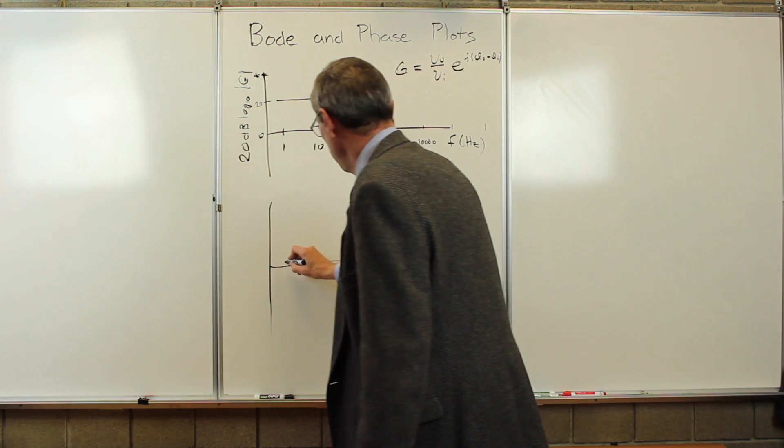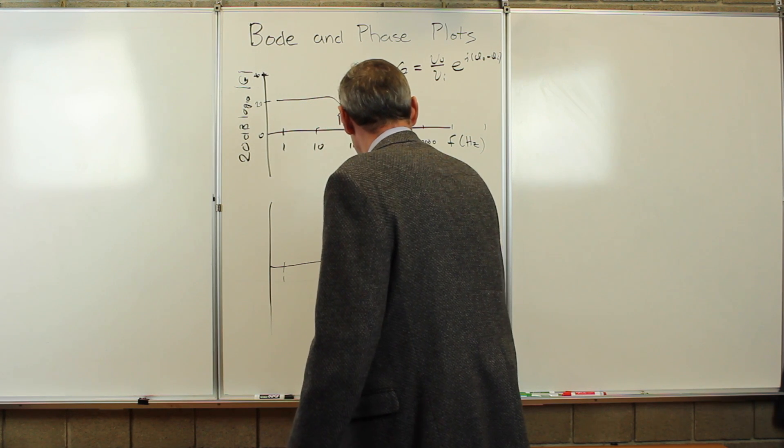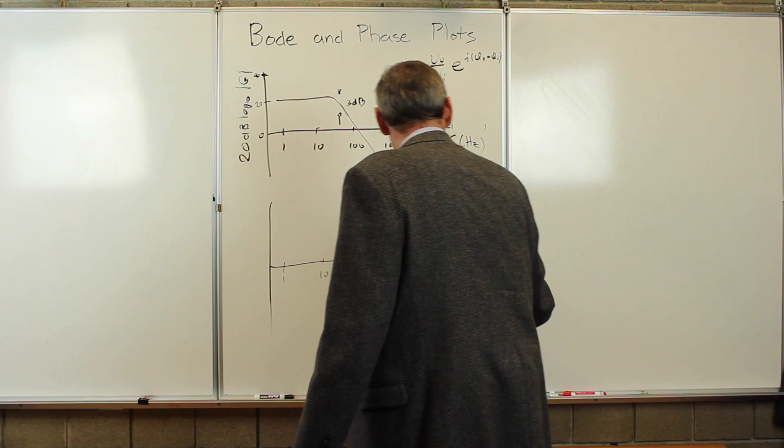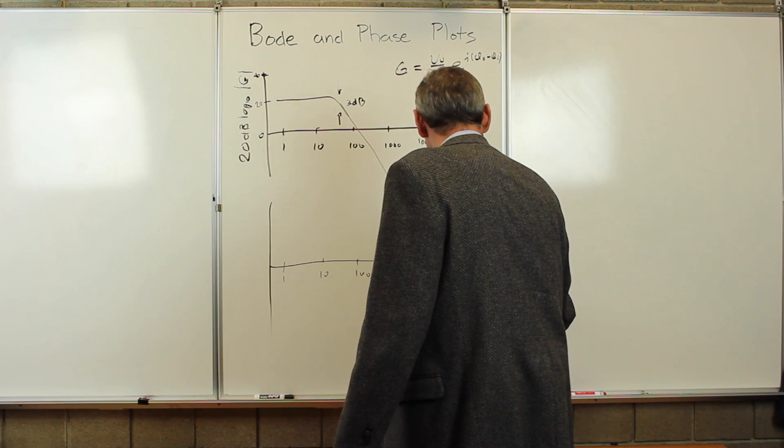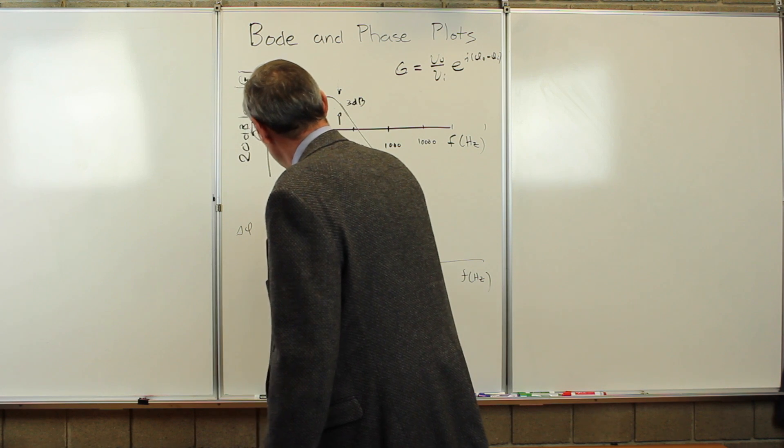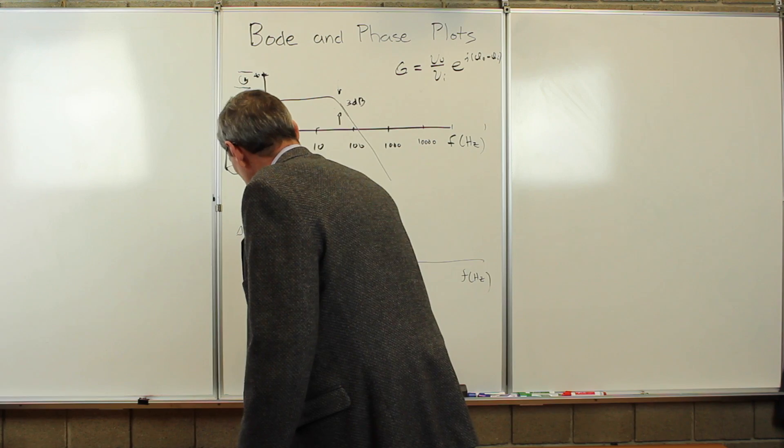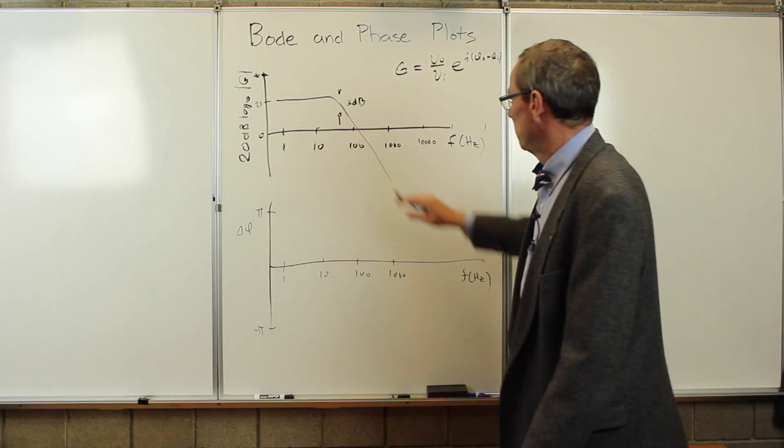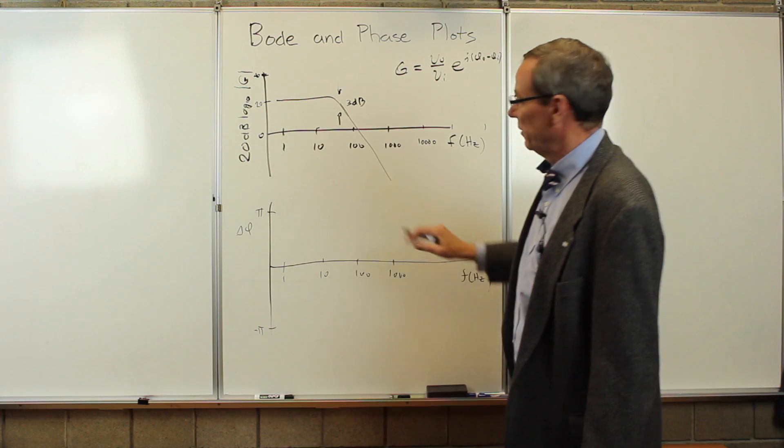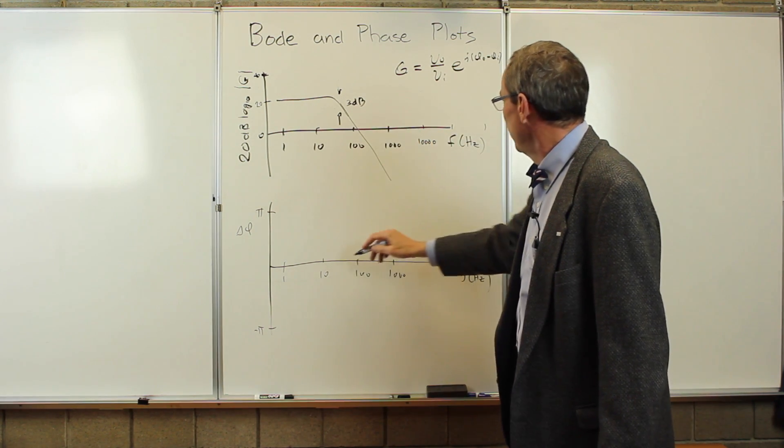Same frequency, so 1, 10, 100, 1000, and so forth. So frequency in hertz. And here we plot the phase difference delta phi. And maybe it goes from pi to minus pi. But we measure this phase difference and plot it as a function of frequency parallel to this.